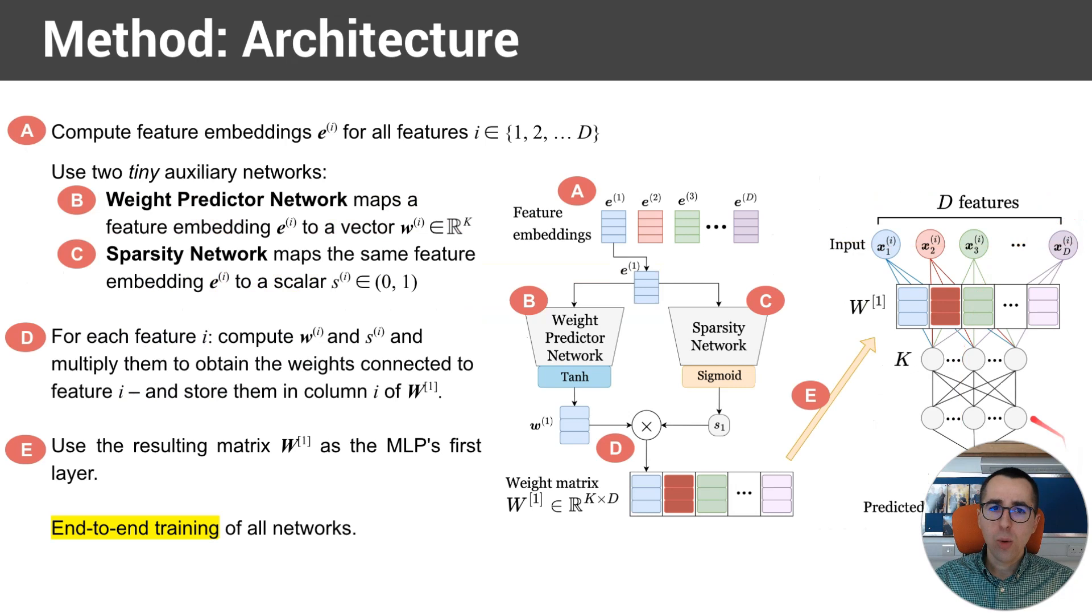Well, on the right, we have the same standard feed-forward network, and on the left, we have the mechanism that we propose. It is a general mechanism, and the output is the matrix of the first layer, so we are predicting this matrix. Now, the first step is to compute some feature embeddings. So for every feature, if we have 5,000 features, for each one of them, we compute some feature embeddings. Now, these embeddings are computed from the same tabular dataset. We don't require any external data. You can use any standard method, like singular value decomposition.